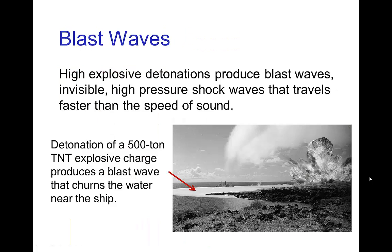With high explosives, you have a blast wave that is produced by a detonation. This is an invisible high-pressure shockwave that travels faster than the speed of sound. You see this in a photograph where there was a large TNT explosion. The rippling that you see on the water is the shockwave as it has passed over the surface of the water, between the ship and the shore.